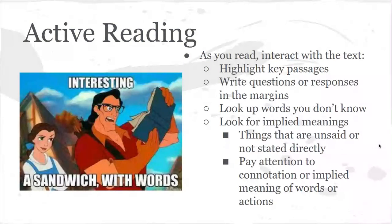As we read literature, just like with anything else we're reading, it's important to read actively. Make sure you're reading with a highlighter and some sort of writing utensil, like a pen or pencil. Or if you're using the online version of the text, make sure you have some way of annotating it — taking notes on the side or using a program that lets you annotate. We want to do things like highlighting key passages, writing questions or responses in the margins, looking up words you don't know, looking for implied meaning — things that are unsaid or not stated directly — and paying attention to connotation, which is the implied meaning of a word or an action.